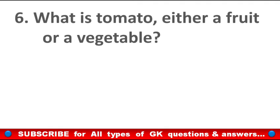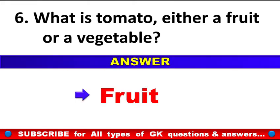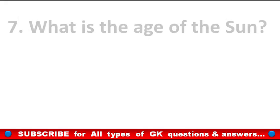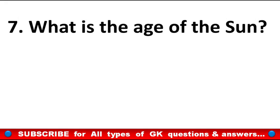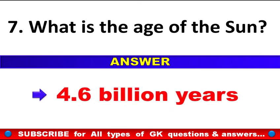What is a tomato — either a fruit or a vegetable? Answer: It is a fruit. What is the age of the sun? Answer: 4.6 billion years.